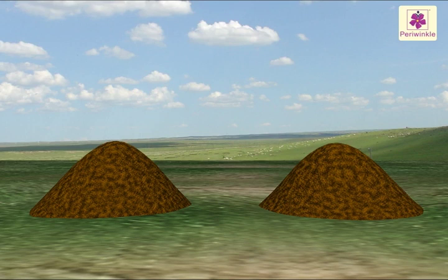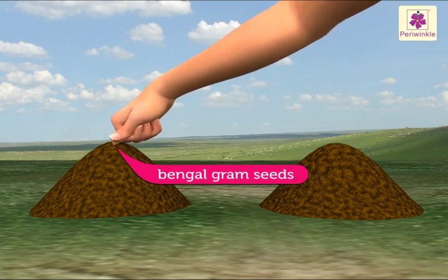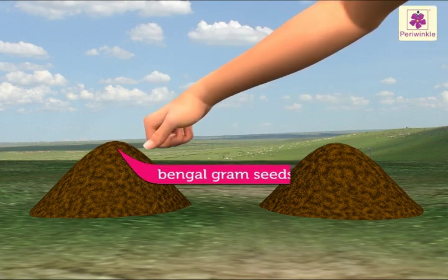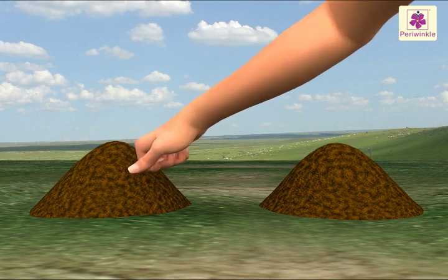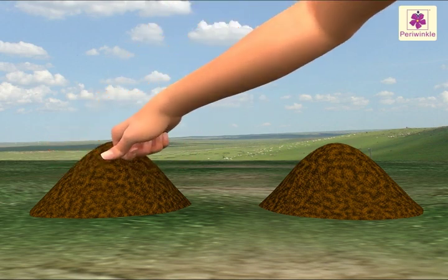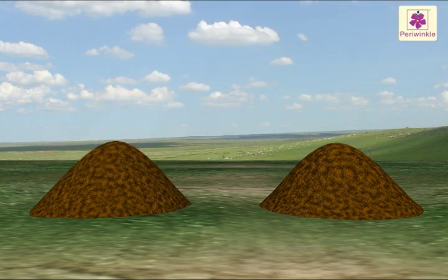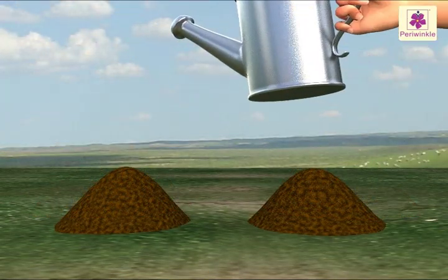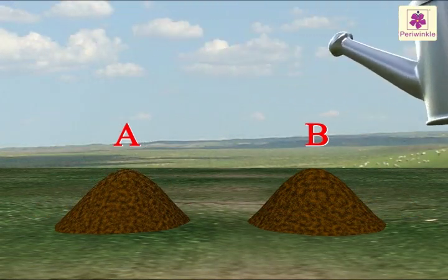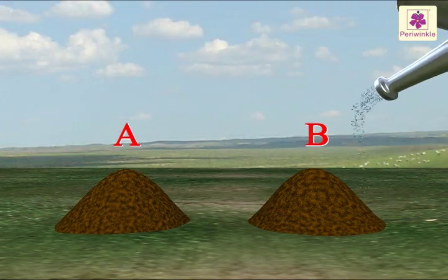Make two mounds of soil. Plant Bengal gram seeds or mustard seeds on one mound, mound A. Do not plant any seeds on the second mound, mound B.